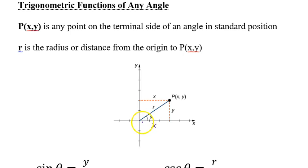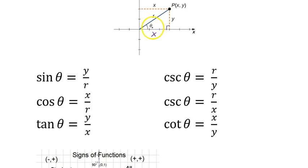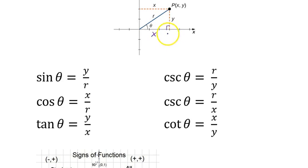We focus on the right triangle formed, where the sides are x, y, and r, and theta is at the vertex (the origin). From this triangle: sine of theta = y/r, cosine = x/r, tangent = y/x, and the reciprocal functions follow from there. You can either memorize these formulas or focus on the triangle — whichever you're more comfortable with, they produce the same results.